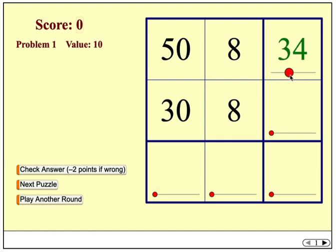I can drag this red point and place it so that I enter 58 here. 30 and 8, we add those to obtain the number that goes here in this square, so 38.